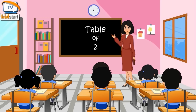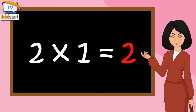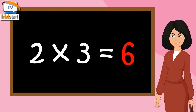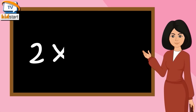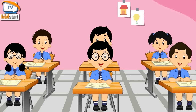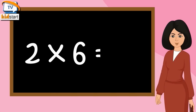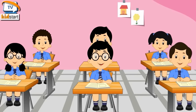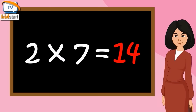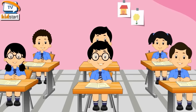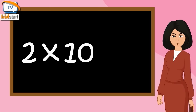Table of Two. Two sixes are twelve. Two sevens are fourteen. Two eights are sixteen. Two nines are eighteen. Two tens are twenty.